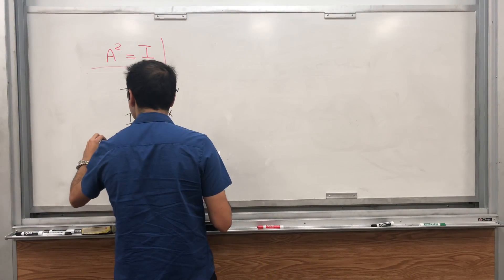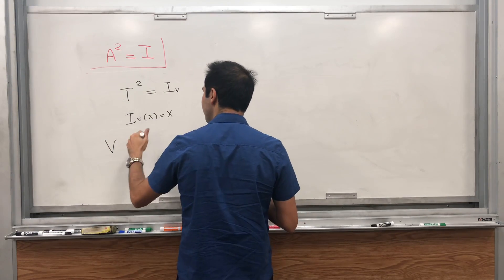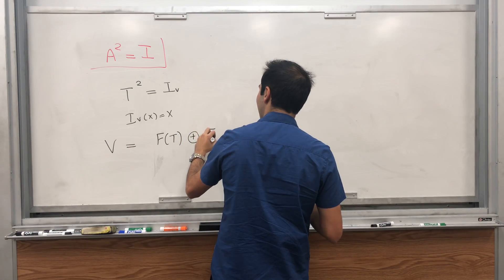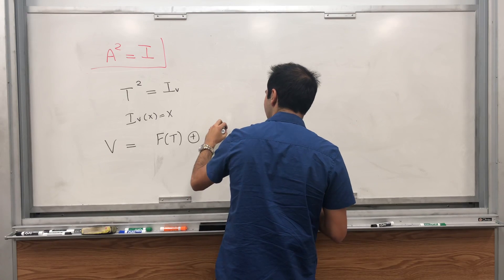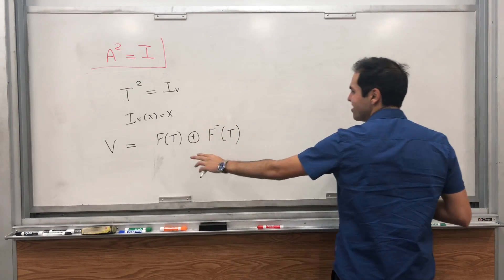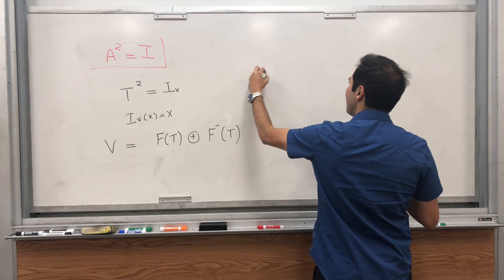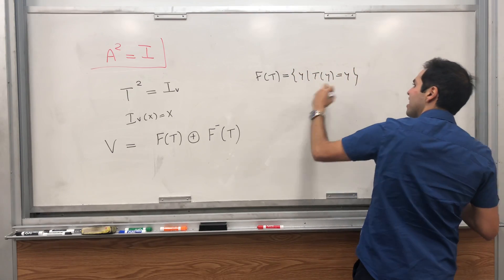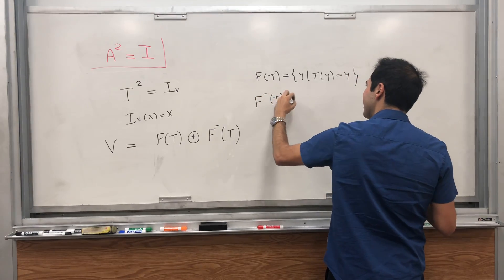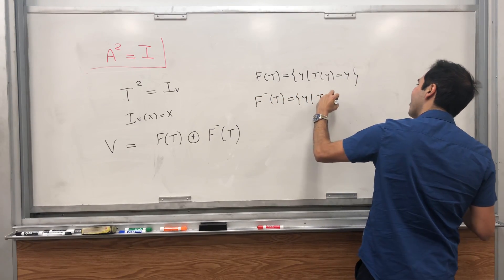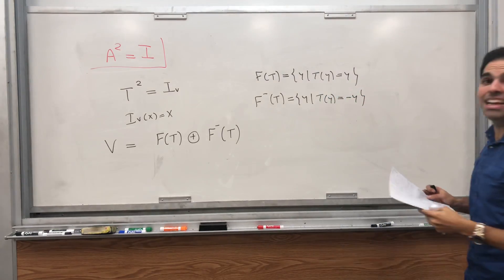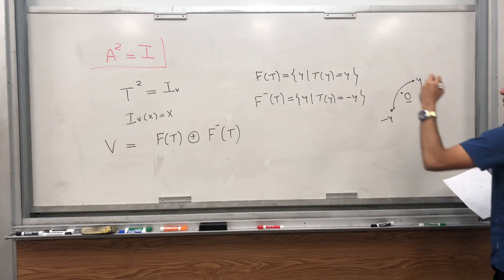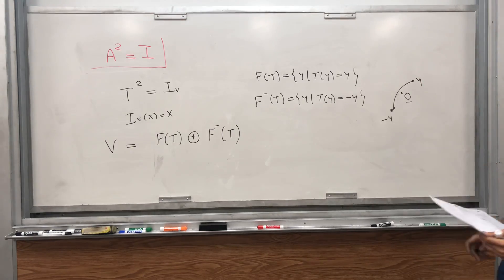And surprisingly it's very similar to the case where A squared equals A, except this time we don't use the null space. We use still the fixed point space, but also another space that I'll talk about in a second. So it turns out here's a magic fact: we can write any V in terms of the fixed point space and minus the fixed point space if you want. So F(T) again is the set of y where T(y) equals y, and F minus of T is basically the set of y where T(y) reflects it, becomes minus y. So you see you have y and then you get minus y, sort of reflects it about the origin, and that would be an element of F minus T.